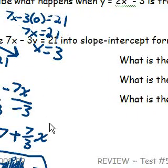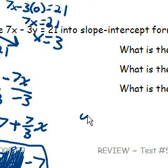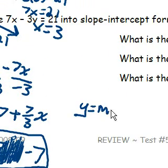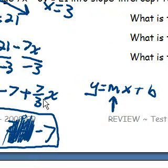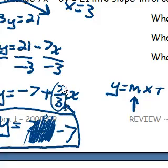What is the slope? Well, we just have to look at the m in our y equals mx plus b. There's the m right there, and here's the m right there, mx. So our slope is 7 thirds.